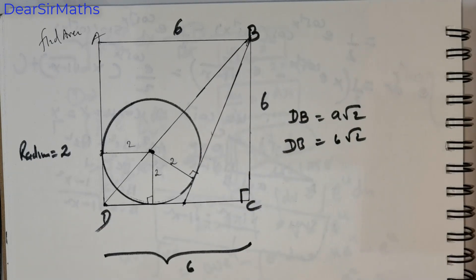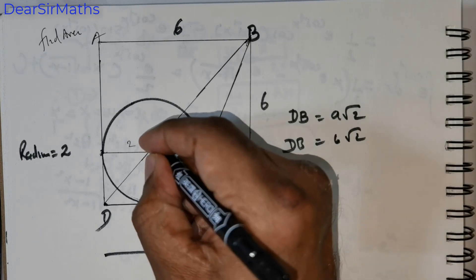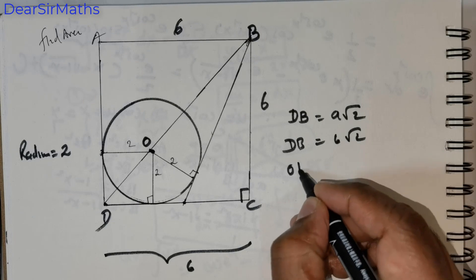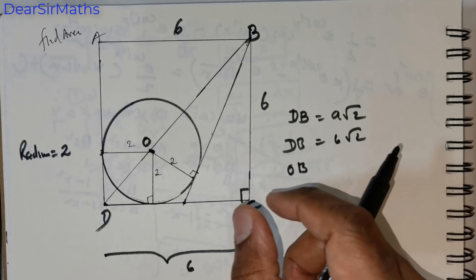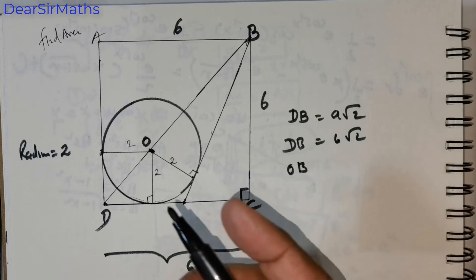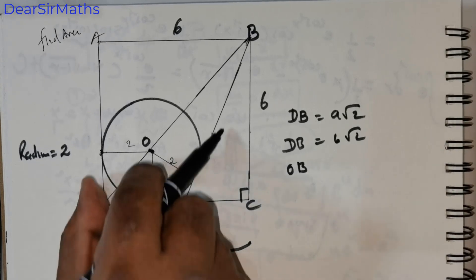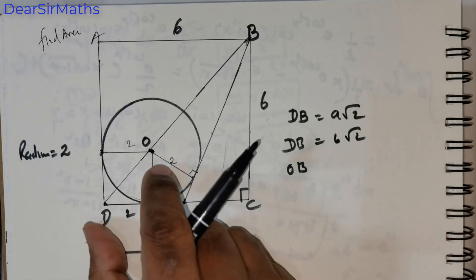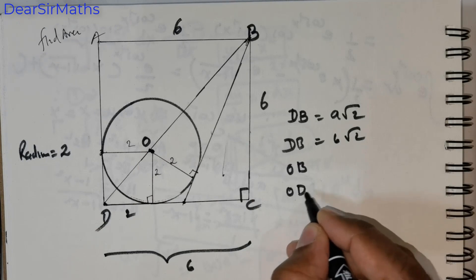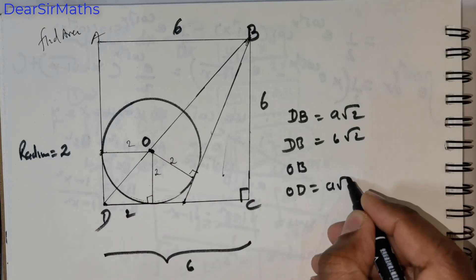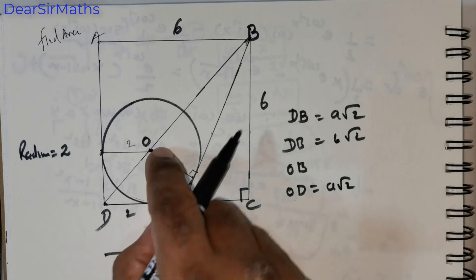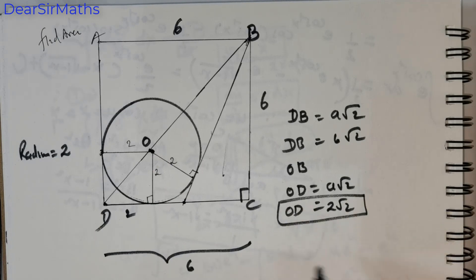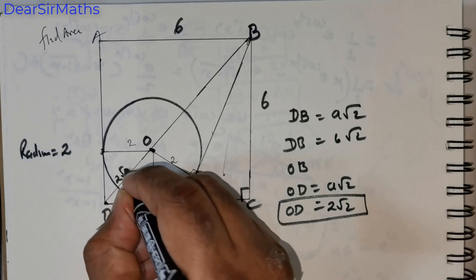Now I'm interested in this point — say this is O. I want to know what OB is. This is 2 units; as I mentioned, this is forming a square, so this is also going to be 2 units. Clearly, OD is going to be A times √2. In this case, the length is 2, so this is equal to 2√2. So OD is equal to 2√2.